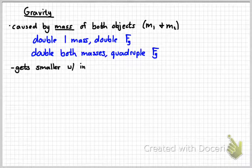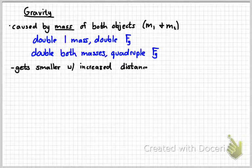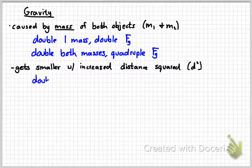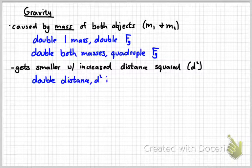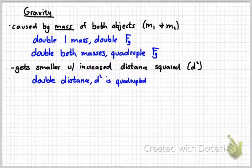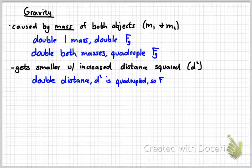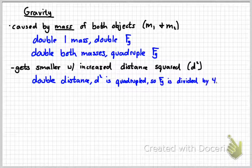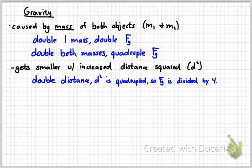Remember that gravity gets smaller with increased distance. It's actually depending on the distance squared. So if you double the distance, you quadruple the distance squared, which means your force of gravity would be one-fourth of what it was before. If you triple the distance, 3 squared would be 9, so G would be divided by 9.